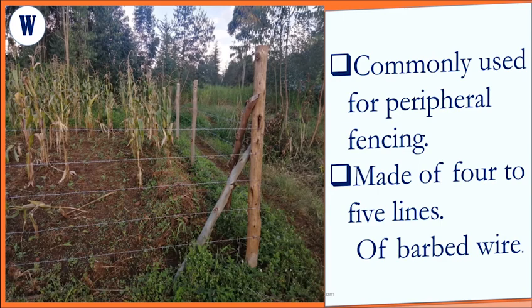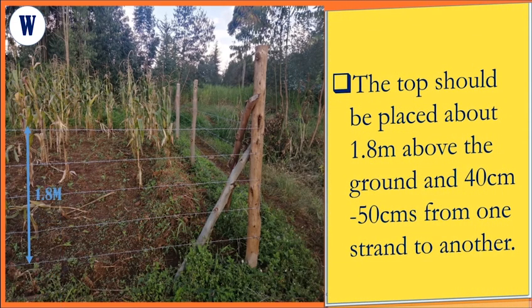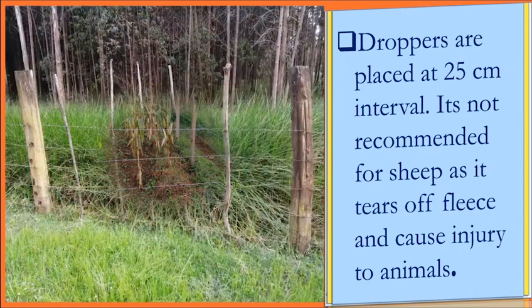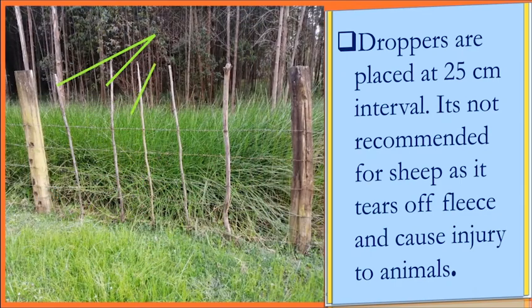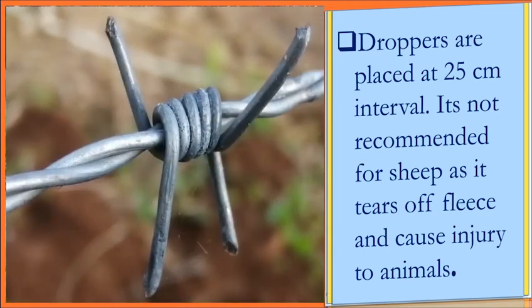We shall start with wire fence W. The wire fence labelled W is a barbed wire fence. It is commonly used for peripheral fencing. It is made of four to five lines of barbed wire. The top wire should be placed about 1.8 meters above the ground, and 40 to 50 centimeters from one strand to another. Droppers are placed at 25 centimeters interval. It is important to note that barbed wire fences are not recommended in sheep farming, as it tears off fleece and causes injury to animals due to the presence of sharp barbs.